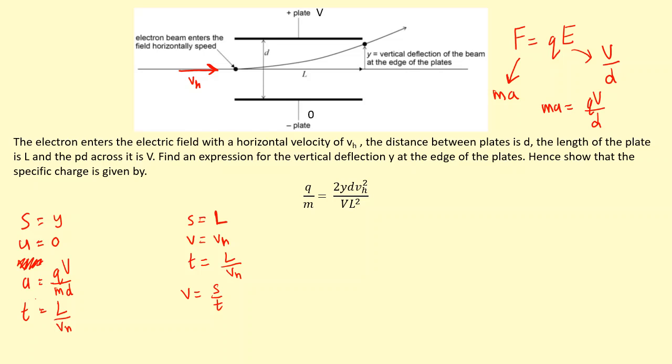So which SUVAT doesn't have v in it? The SUVAT without the v in it is s equals ut plus half at squared, but because u is zero, u times t is going to be zero as well, so we can ignore that.